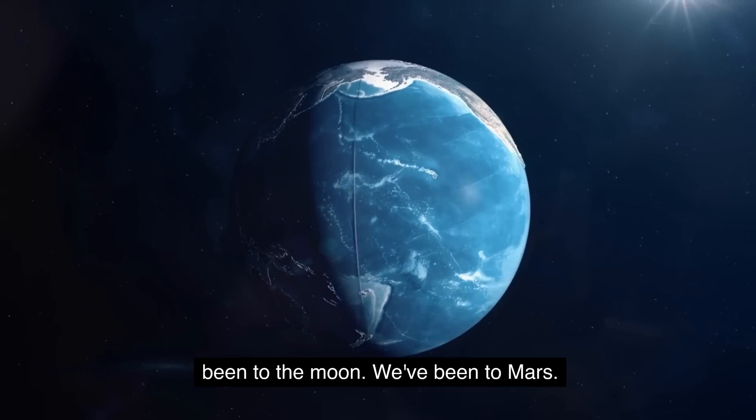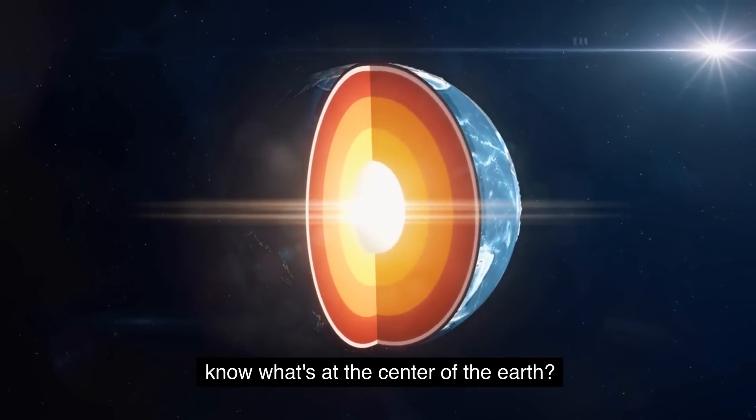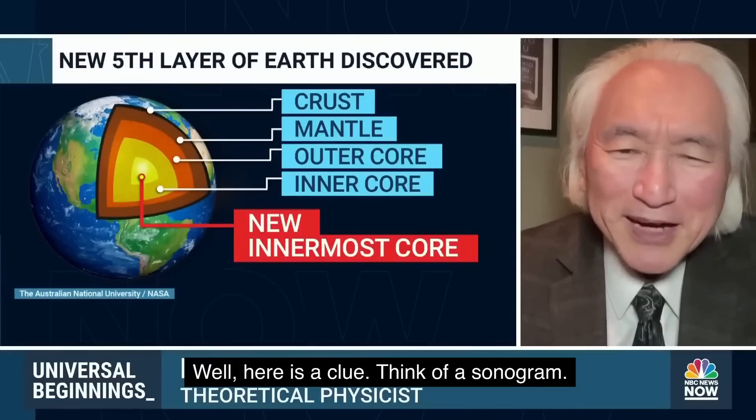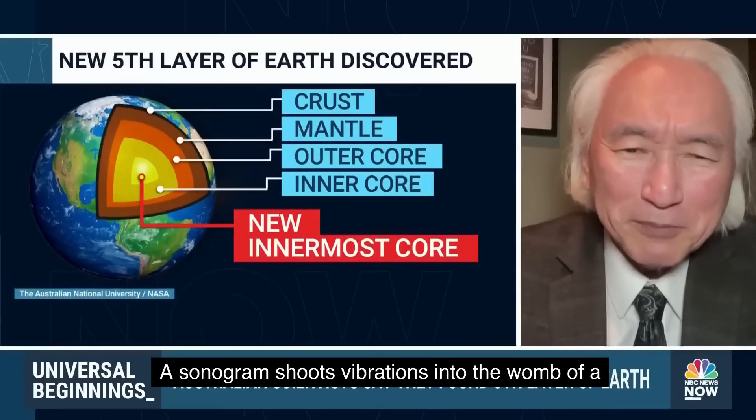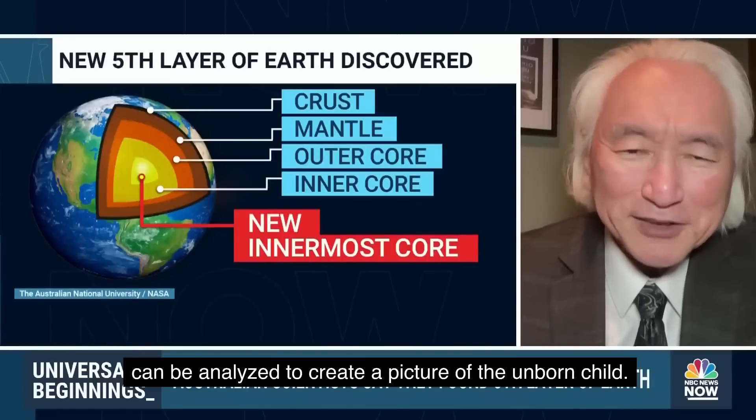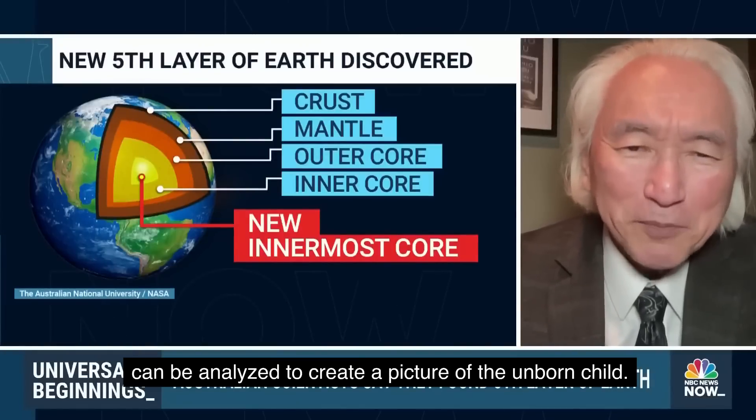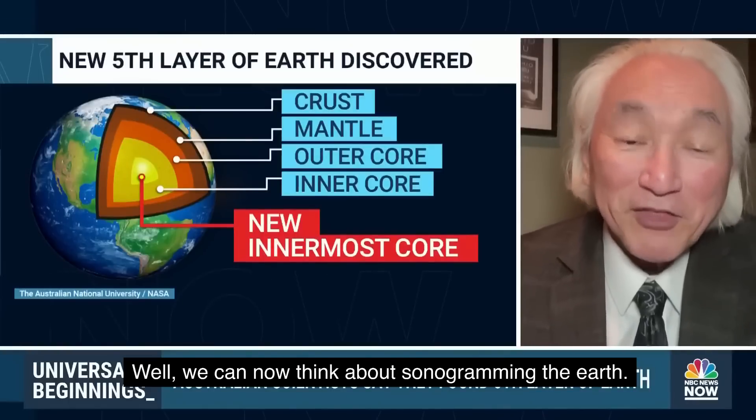We've been to the moon. We've been to Mars. Our probes have gone past Jupiter. How come we don't know what's at the center of the Earth? Well, here is a clue. Think of a sonogram. A sonogram shoots vibrations into the womb of a pregnant woman. The vibrations then create echoes that can be analyzed to create a picture of the unborn child. Well, we can now think about sonogramming the Earth.